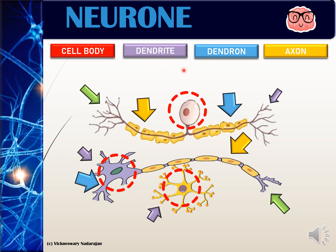To differentiate them we just look at the structure. Dendrites are the smallest branches of the neurons. Dendrons are the part of the neuron that transmit impulses to the cell body. Axons are the part that transmit impulses from the cell body out of the neuron. The sensory neuron has a dendron and axon of almost the same length, as does the interneuron. Only the motor neuron has a very short dendron and a very long axon.